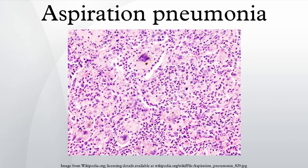Aspiration pneumonia is bronchopneumonia that develops due to the entrance of foreign materials into the bronchial tree, usually oral or gastric contents. Depending on the acidity of the aspirate, a chemical pneumonitis can develop, and bacterial pathogens may add to the inflammation.